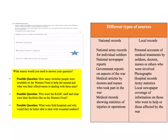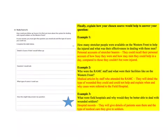Whichever type of source you choose to use, you will need to write in this third part which source you would use. Finally, for whichever type of source you have used, you will then need to explain in a sentence why that would help you to find out more about the question you have asked.